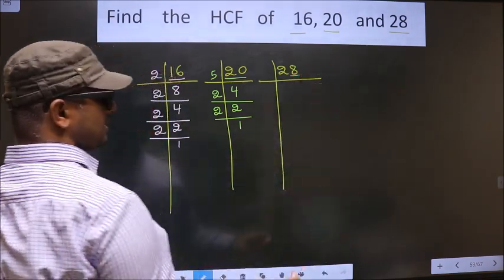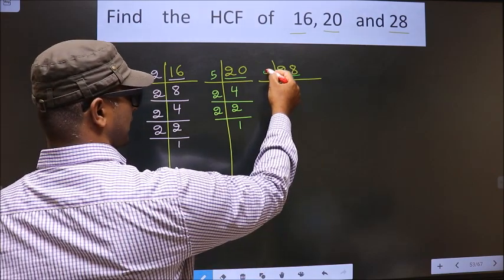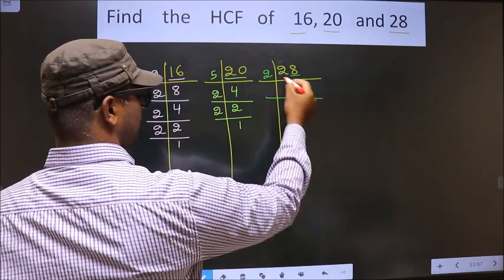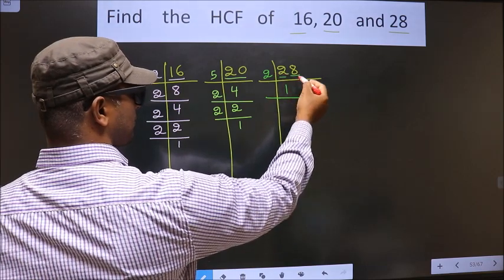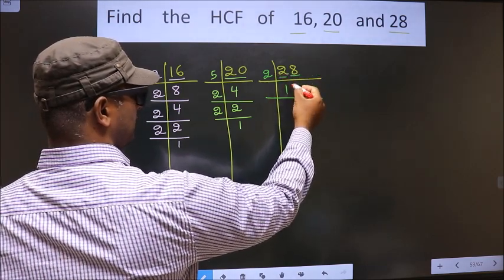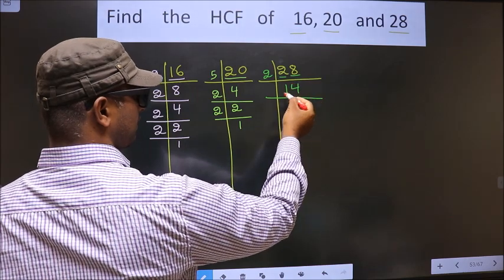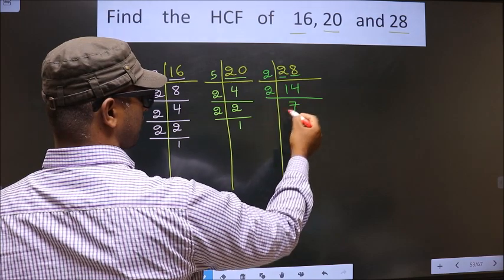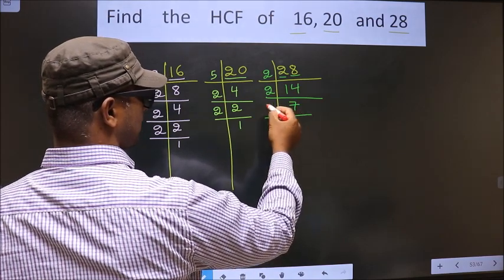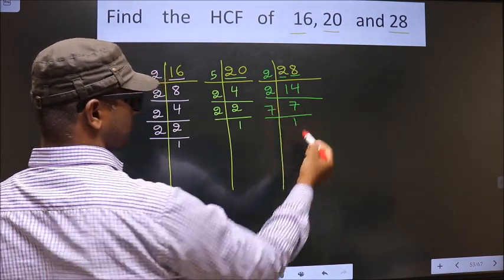Now here last digit is 8 which is even so we take 2 here. First number is 2. When do we get 2 in 2 table? 2 times 1 is 2. Next number is 8. When do we get 8 in 2 table? 2 times 4 is 8. Here we have 14. 14 is nothing but 2 times 7. Now 7 is a prime number so we take 7 times 1 is 7.